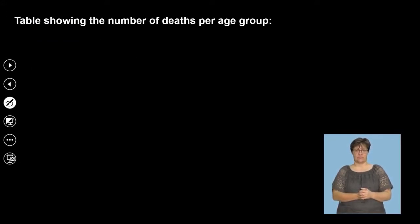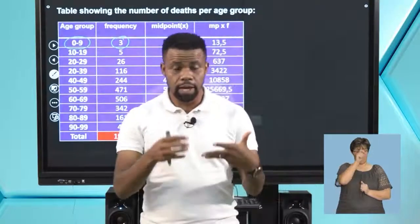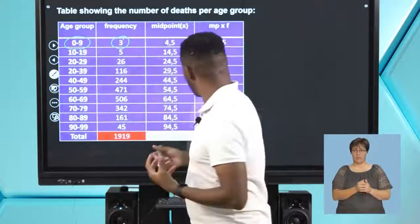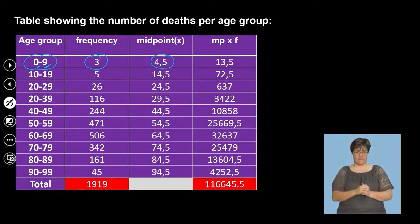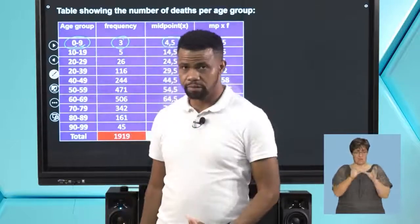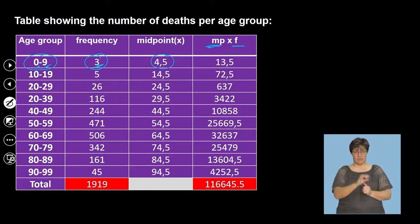So this is the actual table. The age group zero to nine has a frequency of three, meaning three young people between the age of zero and nine died from COVID-19. We then find the midpoint: zero plus nine divided by two gives us 4.5, which is the midpoint of that class interval. Then we calculate midpoint times frequency: 3 multiplied by 4.5 gives us 13.5.